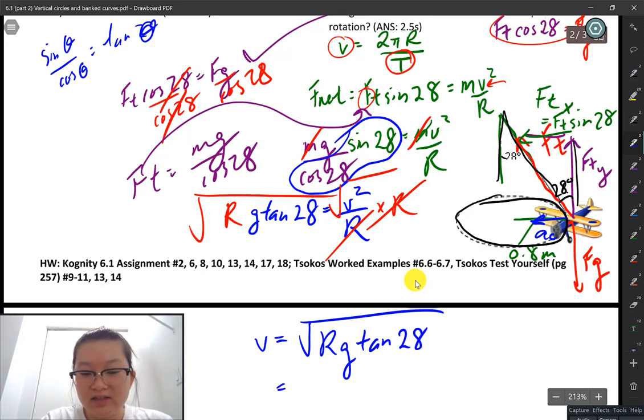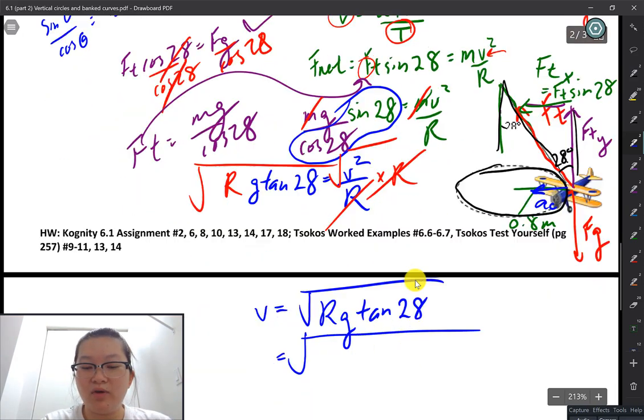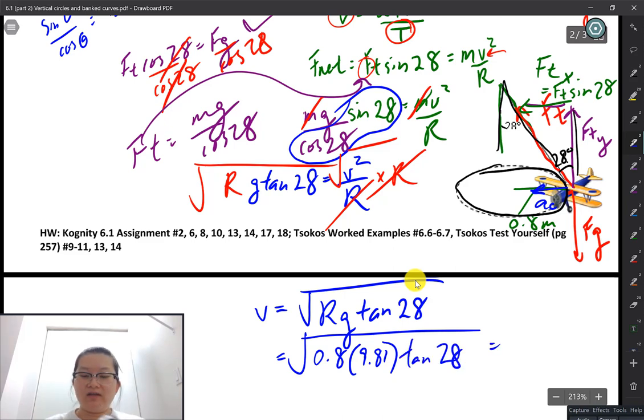I'm going to calculate it with the radius, which is what is the radius again? Radius is 0.8 meters. And the gravity is 9.81 tan of 28. Punching all of this in my calculator and not doing any sort of rounding is going to give me... Okay, so this is going to give me 2.0427 dot dot dot meters per second.